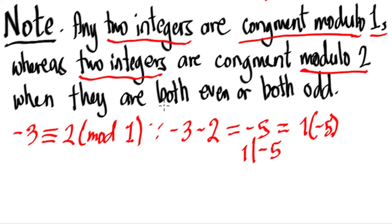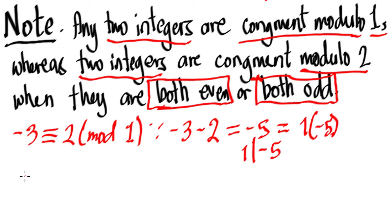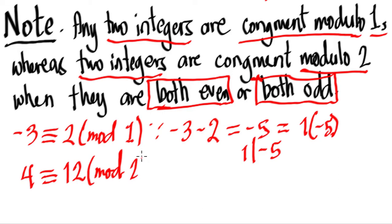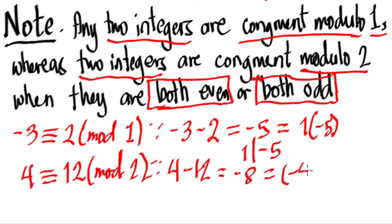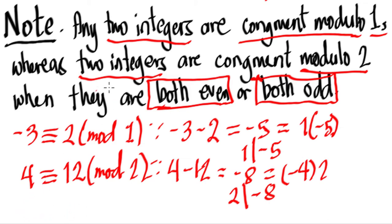Whereas two integers are congruent modulo 2 if they are both even or both odd. For example, 4 is congruent to 12 mod 2 because 4 minus 12 equals negative 8, which equals negative 4 times 2, so 2 is a factor of negative 8. Therefore 4 and 12 are congruent. This also follows for odd numbers — you can check it yourself.